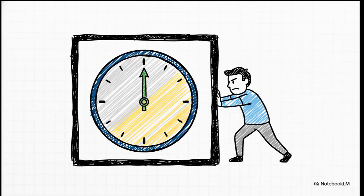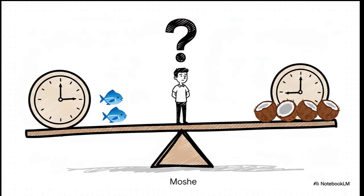Moshe has 12 hours. That's it. Not a minute more. This single limit is going to shape every single decision he makes from here on out. For every hour that goes by, Moshe has two basic choices. He can spend that hour fishing and catch two fish, or he could spend it gathering coconuts and get four of them. The key thing? He can't do both at the same time. This is the trade-off.